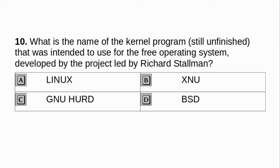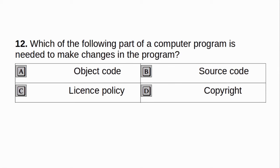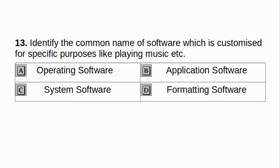What is the name of the kernel program, still unfinished, that was intended to use for the free operating system developed by the project led by Richard Stallman? a. Linux. b. XNU. c. GNU Hurd. d. BSD. Answer: c. GNU Hurd. Which of the following parts of a computer program is needed to make changes in the program? a. Object code. b. Source code. c. License policy. d. Copyright. Answer: b. Source code.